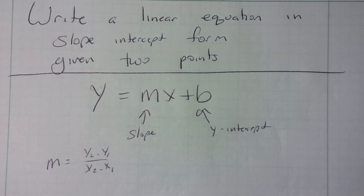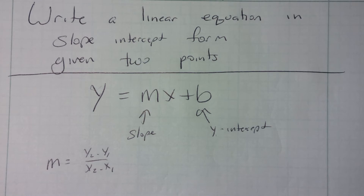Hello. Today we're going to learn to write an equation in slope-intercept form — a linear equation — given two points. They're not going to give us the slope, and they're not going to give us the y-intercept. All they're going to do is give us two points.